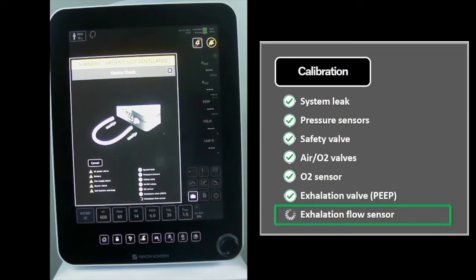The exhalation flow sensor test is comprised of two stages. During the first stage, the exhalation flow sensor is calibrated against the internal inspiratory flow sensor. During the second stage, accuracy of calibration is verified at 30, 10, and 3 liters per minute.